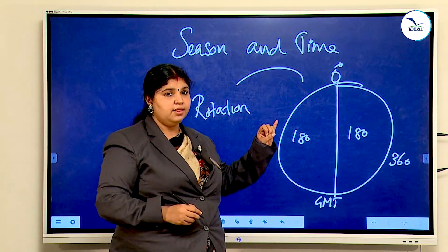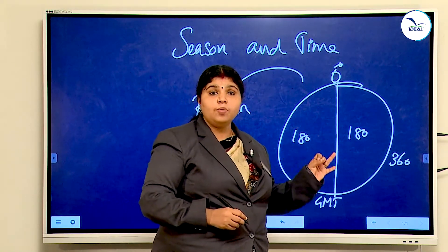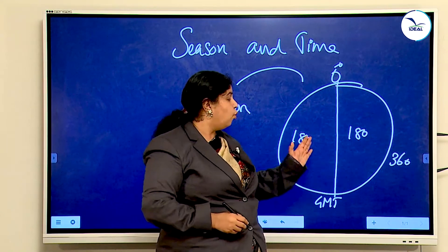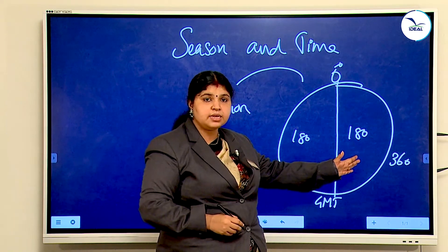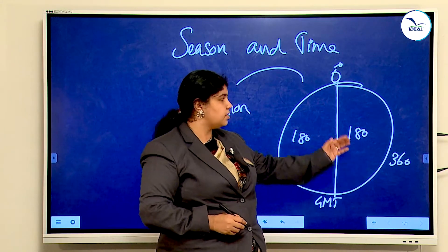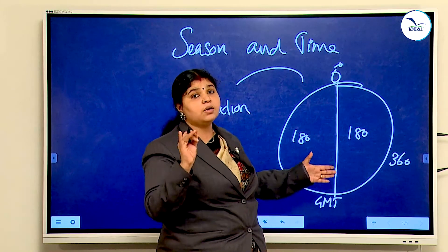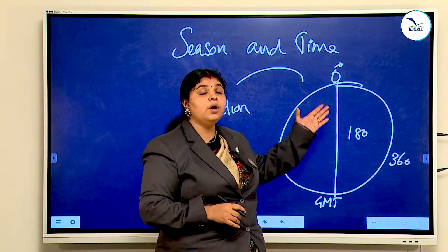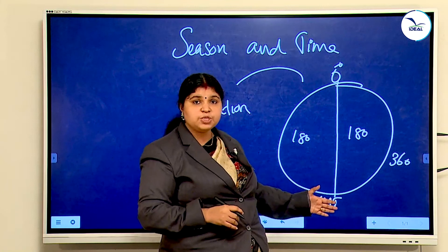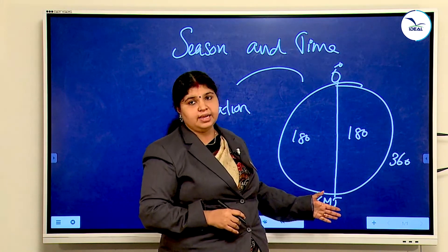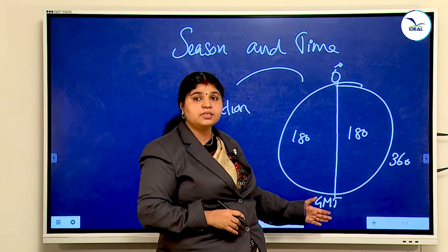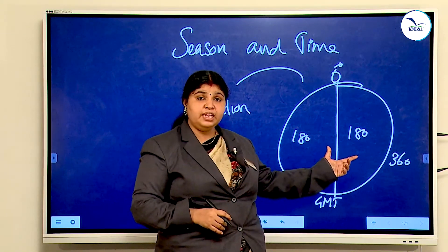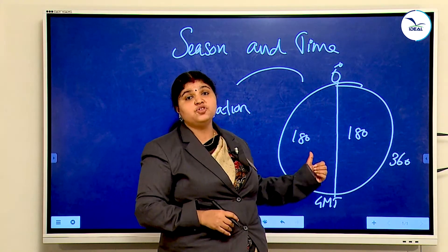So, to summarize: we learned about rotation, and we understand that all over the world time is not the same — time is based on longitude. There are 360 longitudes, 180 in the western and 180 in the eastern hemisphere. The zero degree longitude is called the Prime Meridian or Greenwich Meridian. The worldwide time is based on this meridian, and the local time of Greenwich Meridian is called Greenwich Mean Time. Based on this Greenwich Meridian, the world is divided into 24 time zones.